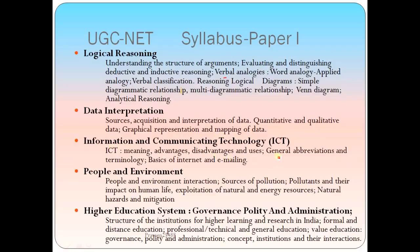Information and Communication Technology covers meaning, advantages, disadvantages and uses, general abbreviations and terminology, and basics of internet and mailing — for example, Web 2.0 is asked in recent exams. People and environment covers people-environment interaction, sources of pollution, pollutants and their impact on human life, and exploitation of natural and energy resources.